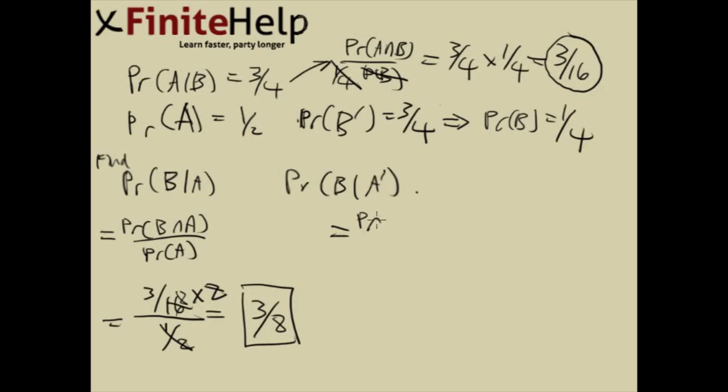Here again, first step for this part. Change that to B intersect A' over the probability of A'. Again, the bottom is something easy. If A is one-half, that just means that A' is also one-half.